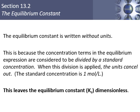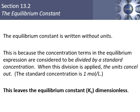Another thing that's a little different about this chapter is that equilibrium constants are written without units, because we assume that all the concentration terms have the same units, so they cancel each other out. We leave the constant as just a number.